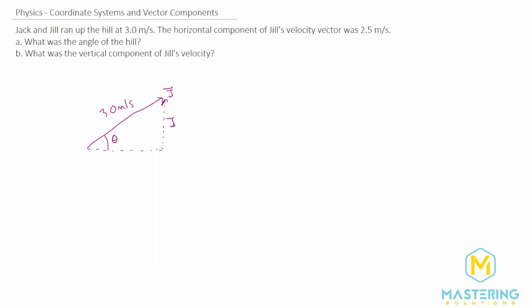So we need to find the j sub y, or the vertical or y component to her velocity vector there. For part A, finding the angle of the hill. Oh, and there's one other thing that we forgot to label. We have 2.5 meters per second is given as the horizontal component of Jill's velocity vector.